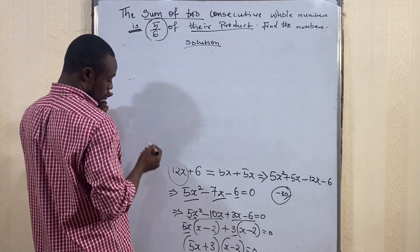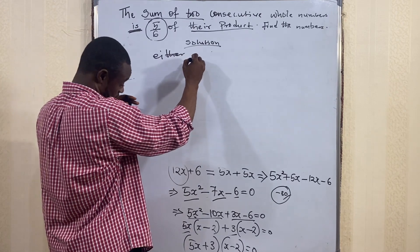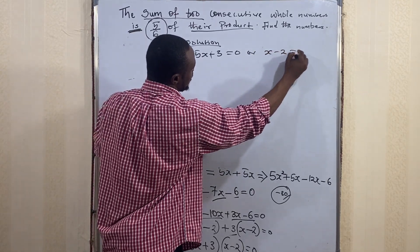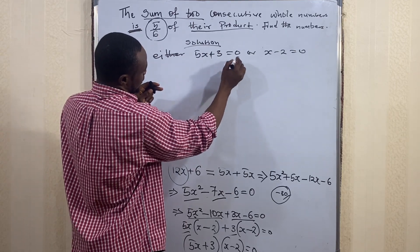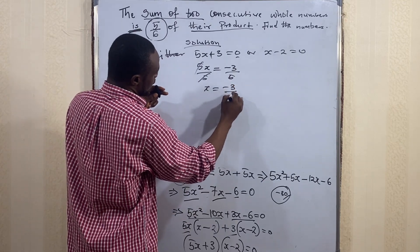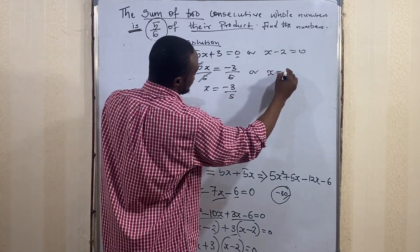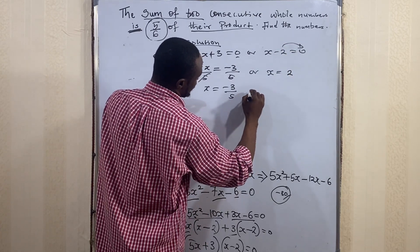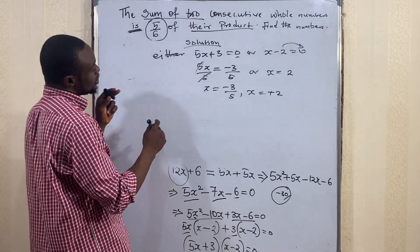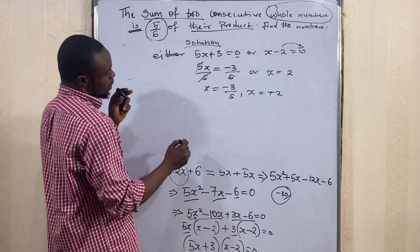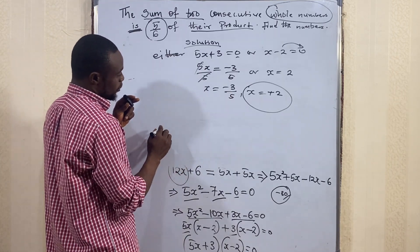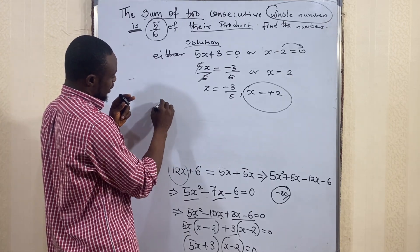From (5x + 3)(x − 2) = 0, either 5x + 3 = 0 or x − 2 = 0. From the first: 5x = −3, so x = −3/5. From the second: x = 2. Since the question asks for whole numbers, x = −3/5 is not a whole number, so we consider only x = 2.